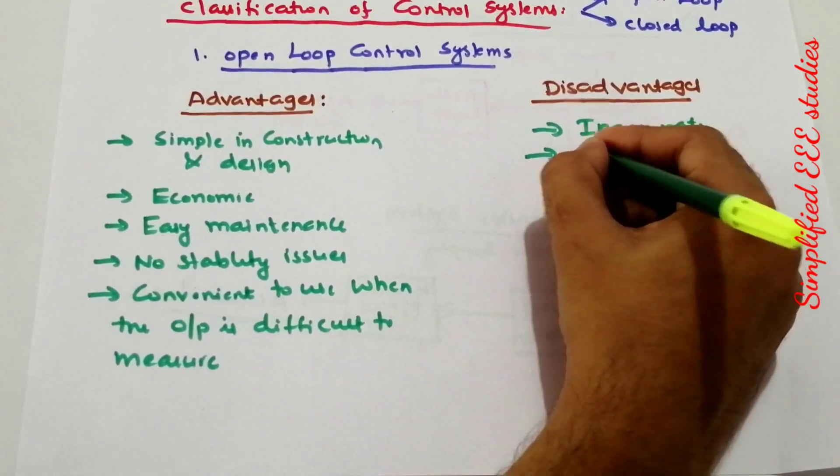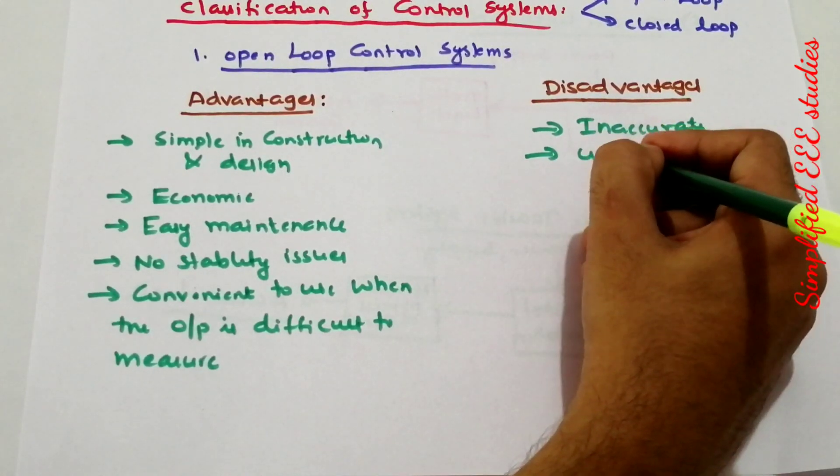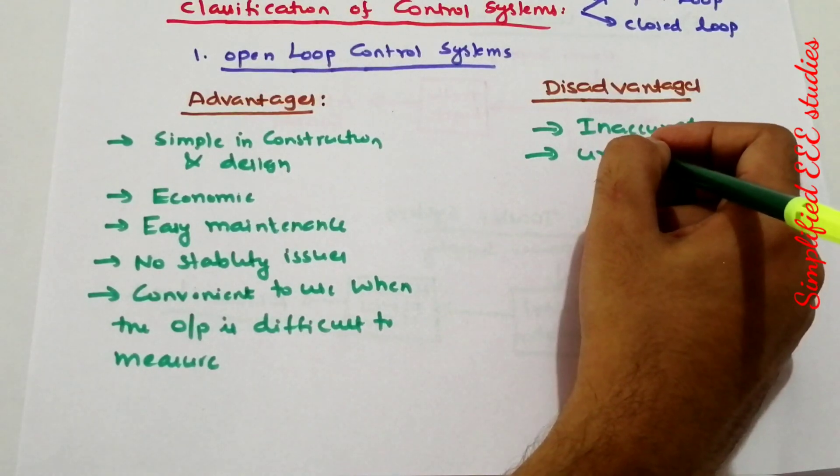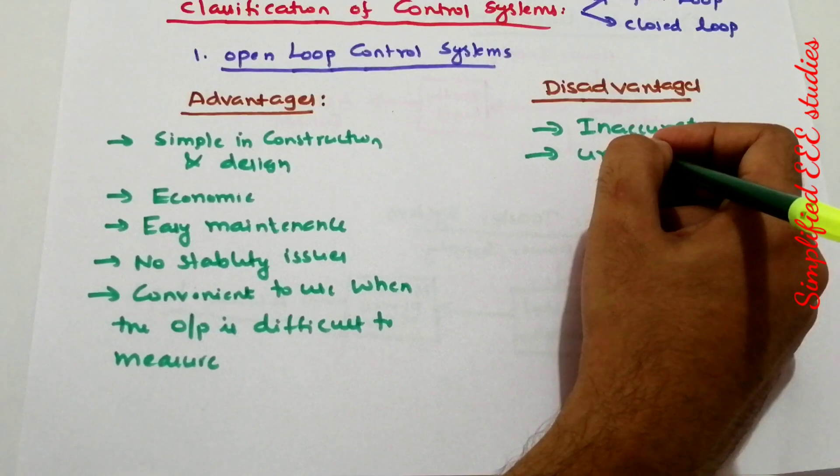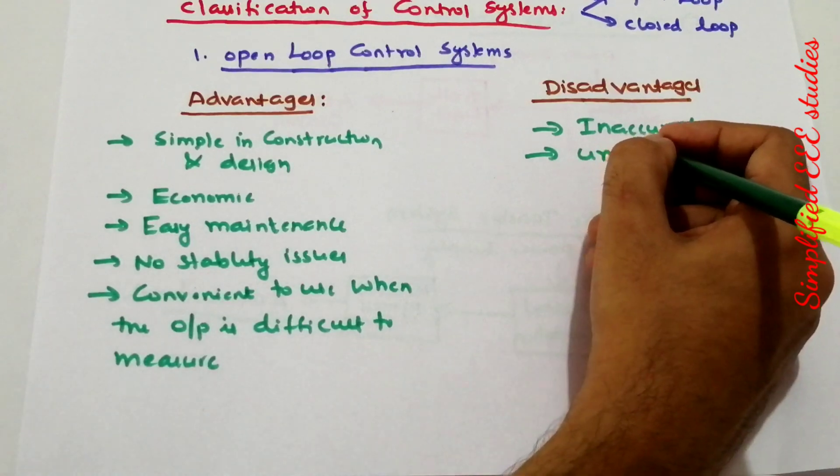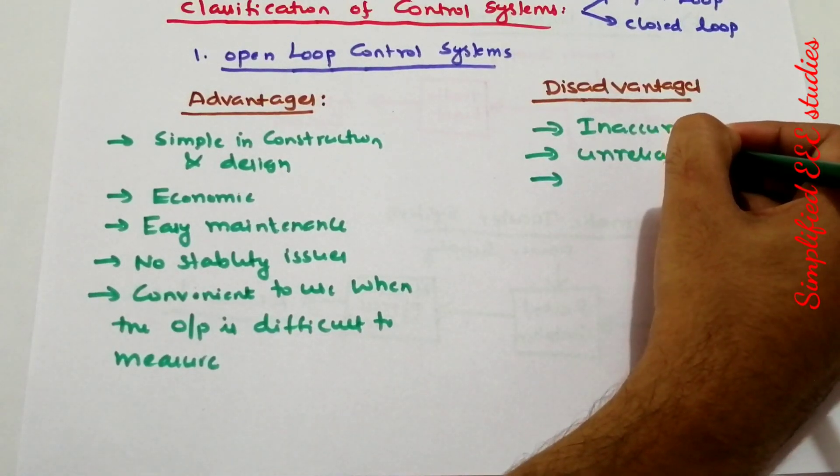Second, it is unreliable. It is applicable only to certain systems, not all systems. We cannot say that open loop control systems are reliable—they may give inaccurate results.